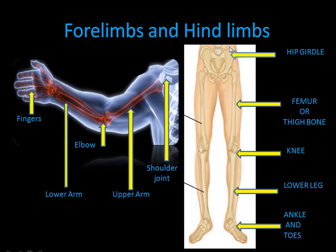In the forelimbs, in your arm, this is the shoulder joint. The upper arm is one bone. Where those bones join is the elbow. The lower arm has two bones, and then there are your fingers. Similarly, in the lower section — your legs — this is the hip girdle, this is the femur or thigh bone which is the longest bone, this is your knee, the lower leg has two bones, and these are the ankle and toes.